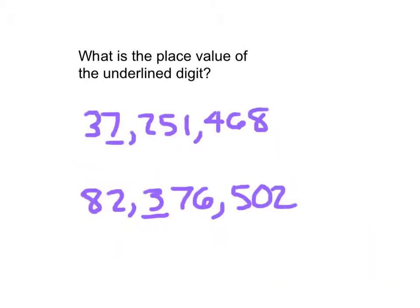Remember, there's a difference between place value versus value. Here, this question is asking what is the place value of the underlined digit. And so it's asking you what that place is. And then so in that first number, 37,251,468, that place value there of that underlined digit, that is in the millions place.